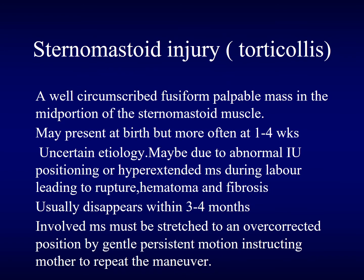Sternomastoid injury presents as a well-circumscribed, fusiform, palpable mass in the mid portion of the sternomastoid muscle. It may present at birth but more often at one to four weeks. The etiology is uncertain — it may be due to abnormal intrauterine positioning or a hyperextended muscle during delivery, leading to rupture, hematoma, and fibrosis forming the subsequent mass. We usually reassure the patient; it usually disappears by itself within three to four months. Some patients need physiotherapy by rotating the head toward the affected side.